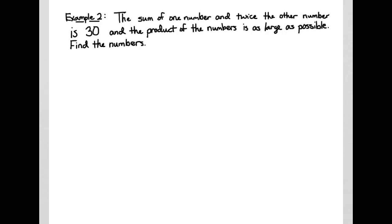This video gives another example of optimization. In this example, we're considering two numbers where the sum of one number and twice the other number has a value 30, and the product of the numbers is as large as possible. Our goal is to find these two numbers.